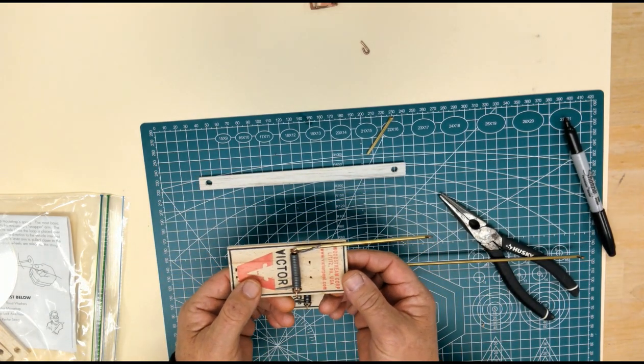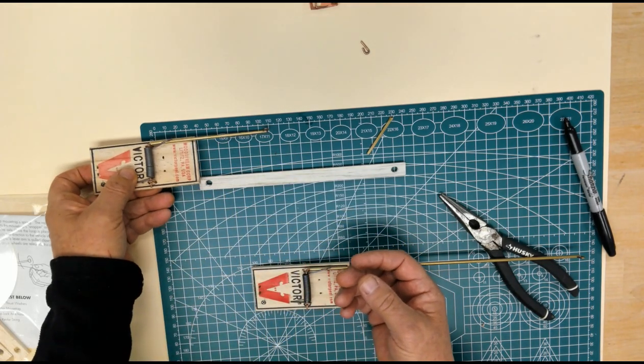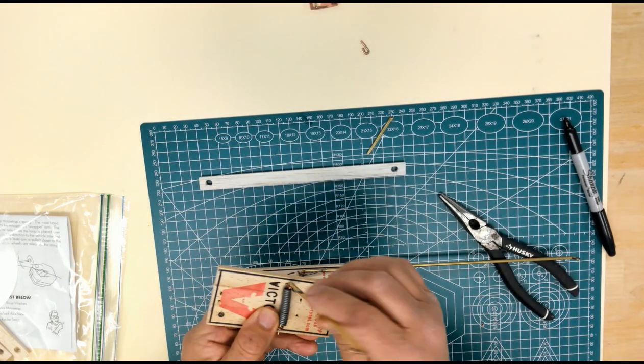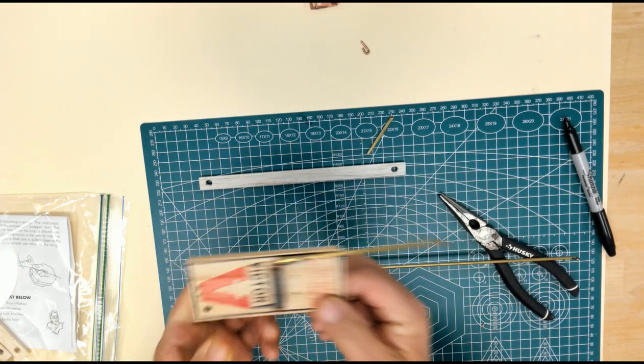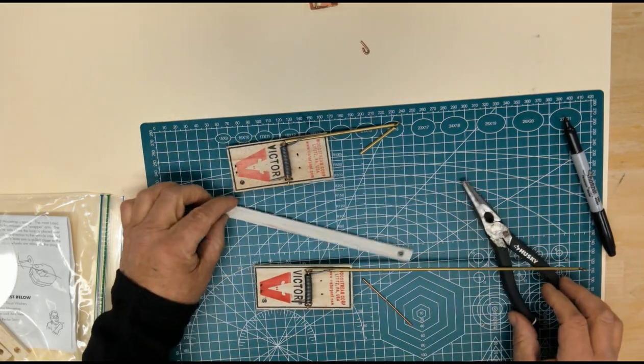So here we are. This is a mousetrap with lever arm, 110 millimeters. I made the length of my lever arm, and it is all set to go. This is the first step you want to do in building your mousetrap car.